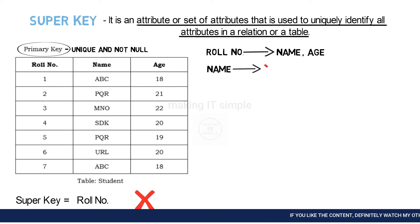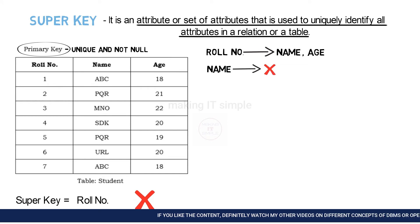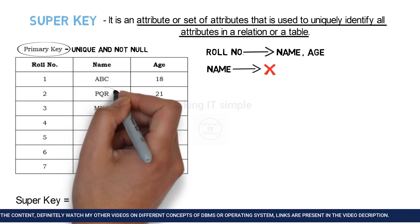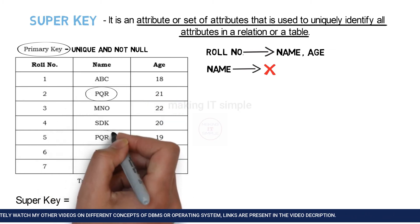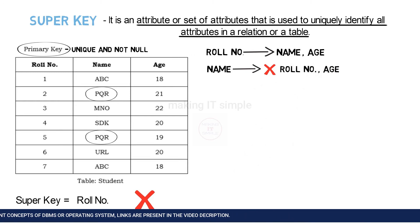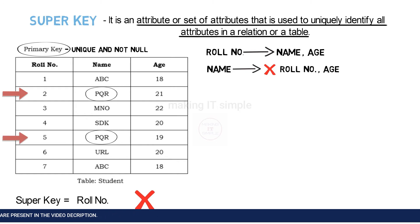Can the name attribute be a super key? The answer is no, as the names of two students can be the same. Using just the name we cannot uniquely identify other attributes. Using name, can we get role number and age? We can see a redundant or repeating name in our example. If I say I want the role number and age of a particular student, it will not be able to differentiate between two records with the same name. Therefore, name cannot be a super key.